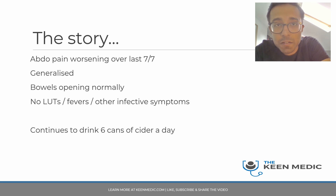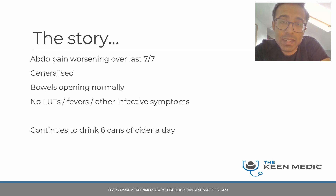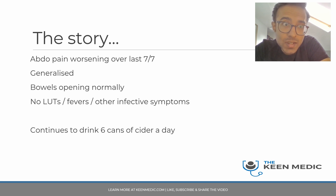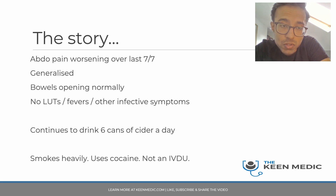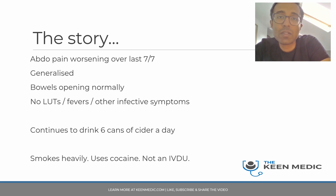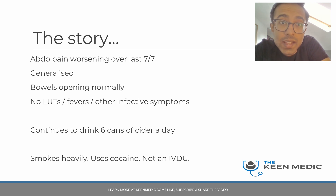He has been drinking six cans of cider a day and continues to do so — clearly drinking very heavily. He also smokes heavily and uses cocaine, but is not an intravenous drug user. So he has generalized abdominal pain worsening over the last week in the context of very heavy alcohol use.